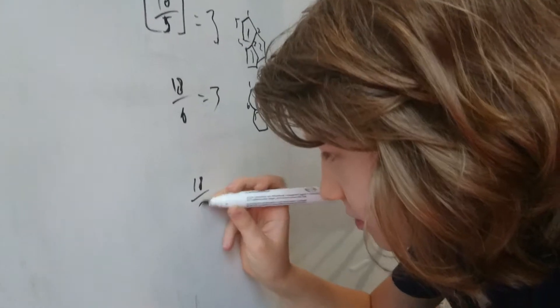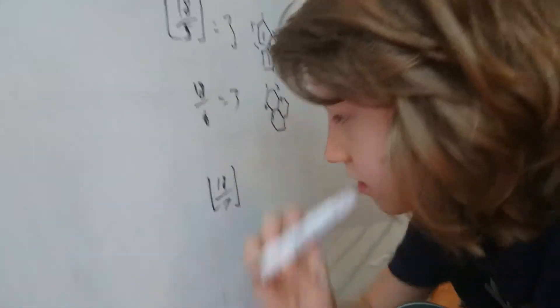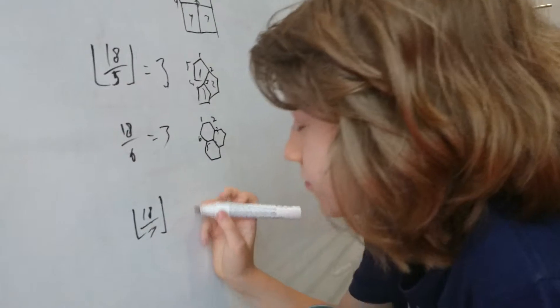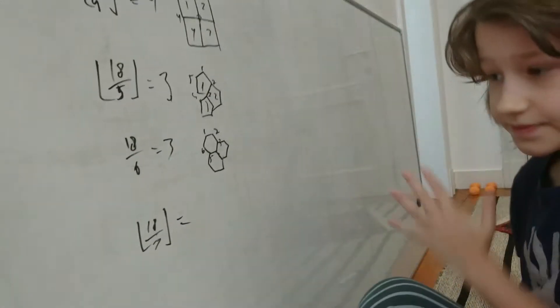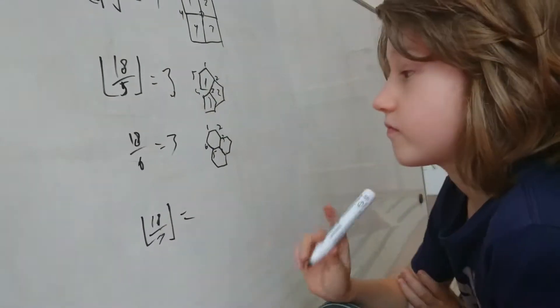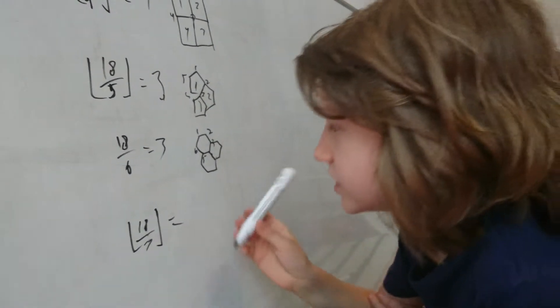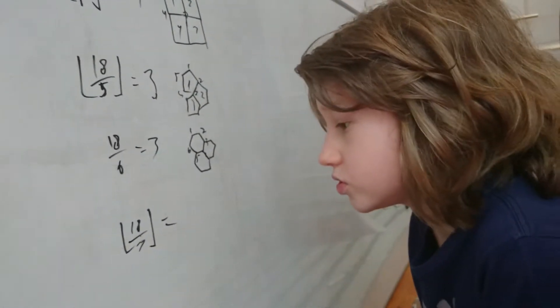18 divided by 7, round them down. 1, 2, 3, 4, 5, 6. 1, 2, 3, 4, 5, 6, is equal to 2.